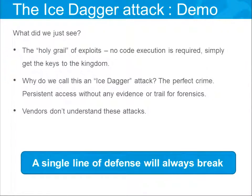Even Microsoft, after working with them for so long, didn't understand the impact — they rated this as 'high' and not 'critical.' The reason was that it doesn't allow code execution. But you don't need code execution in the case of SaaS because you get the identity instead. It's much stronger than code execution. It's like a whole attack in one single HTTP request. That's the attack.